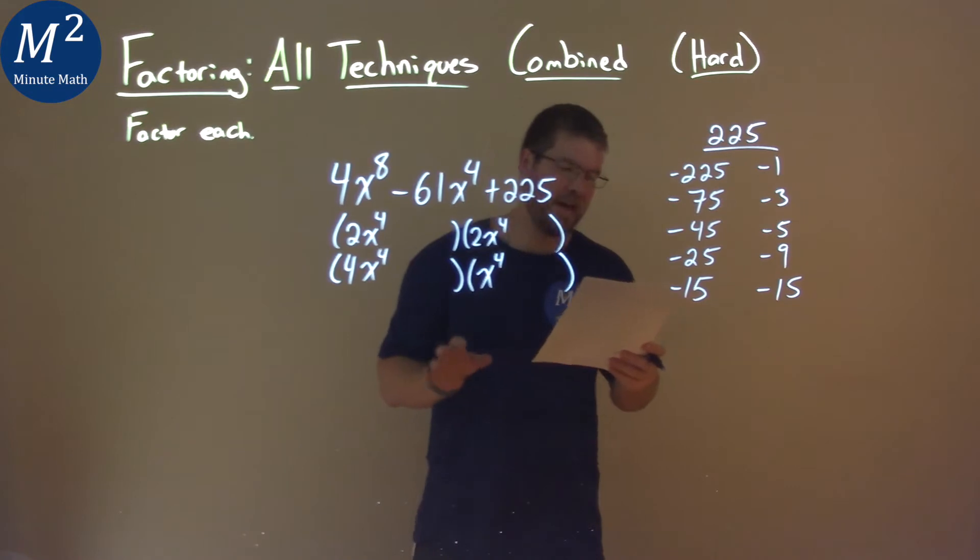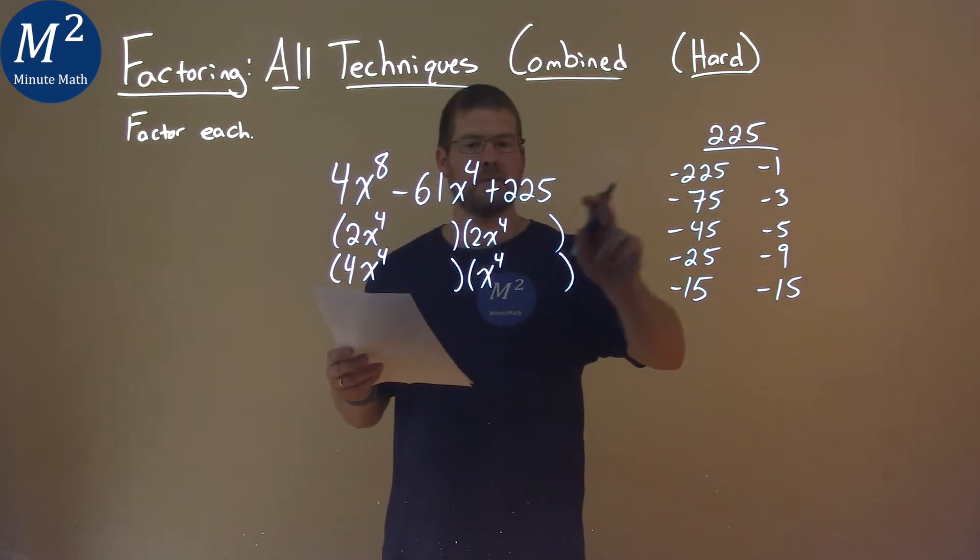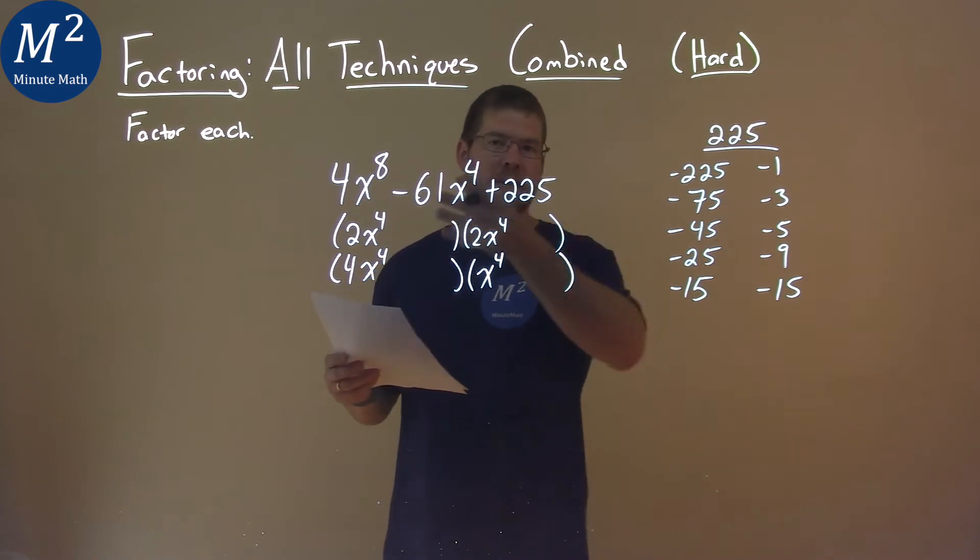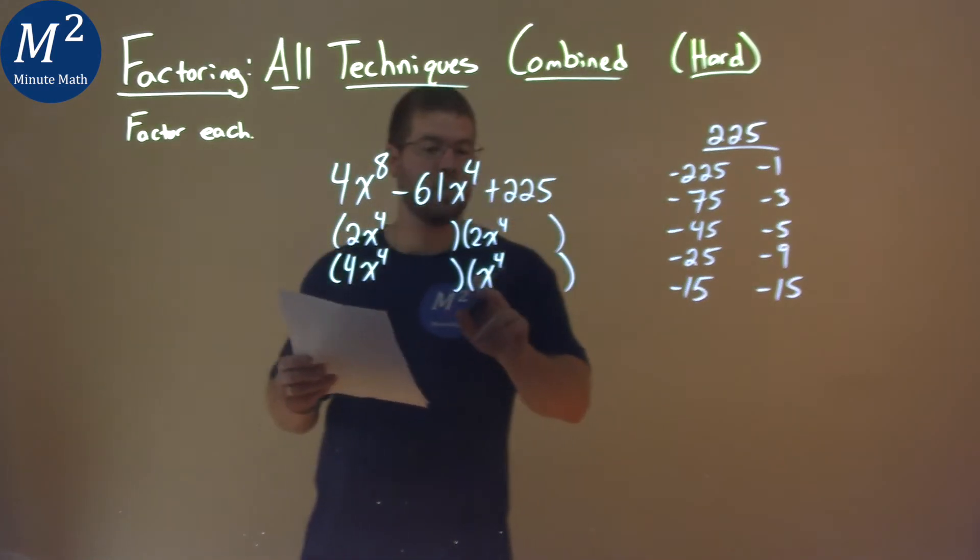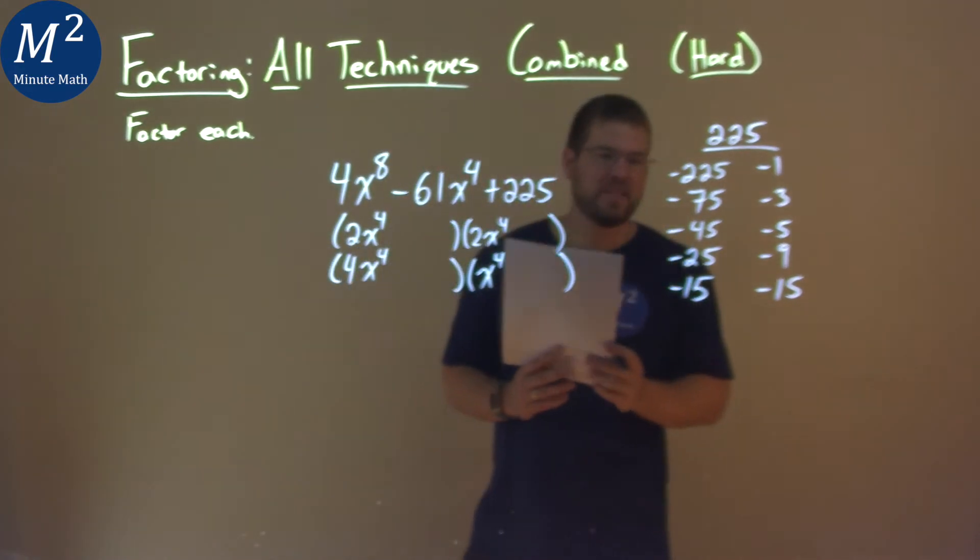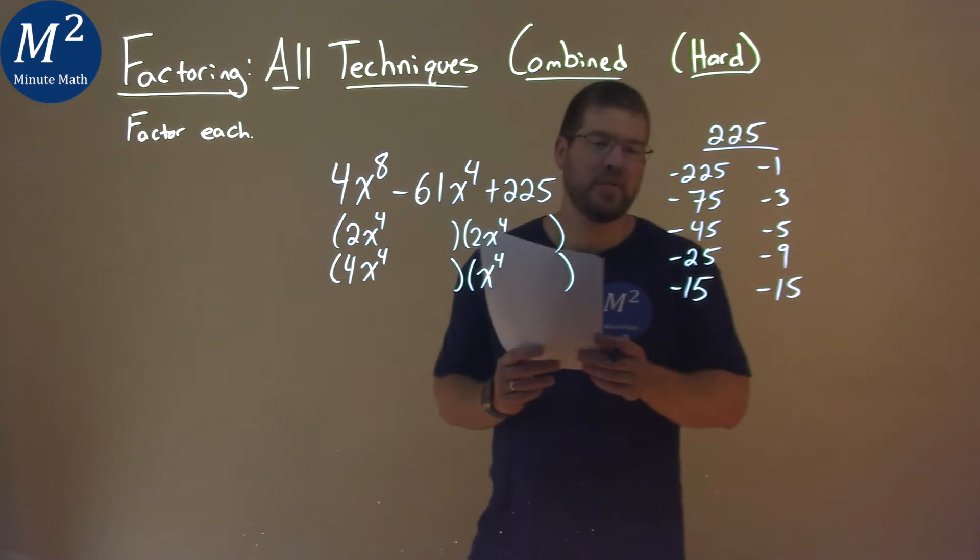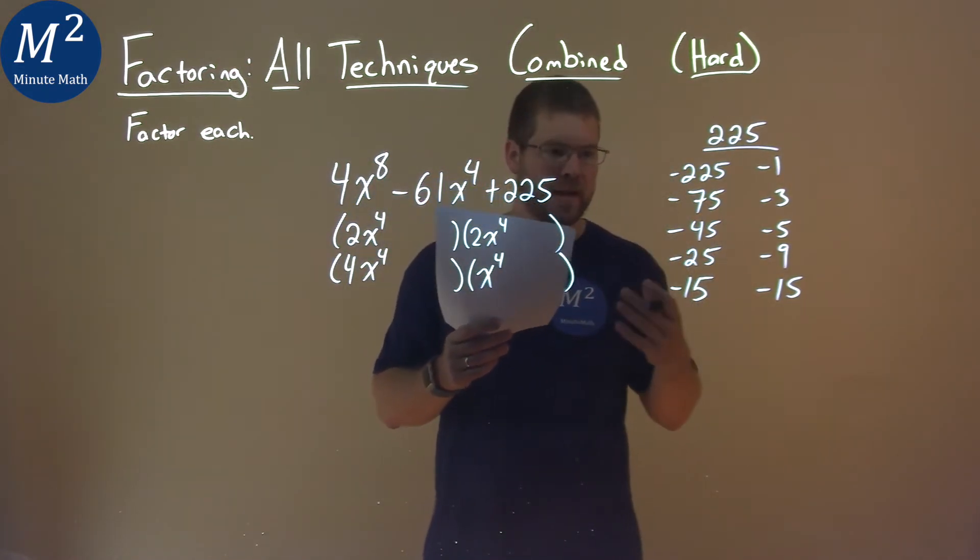So now we have to ask ourselves: 2 times one of the numbers plus 2 times the other number, does it get us negative 61? Or 4 times one of the numbers plus 1 times the other number gets us negative 61. And so we can try a whole bunch of these out there and that's where we kind of go guessing. We're going to jump to the answer.